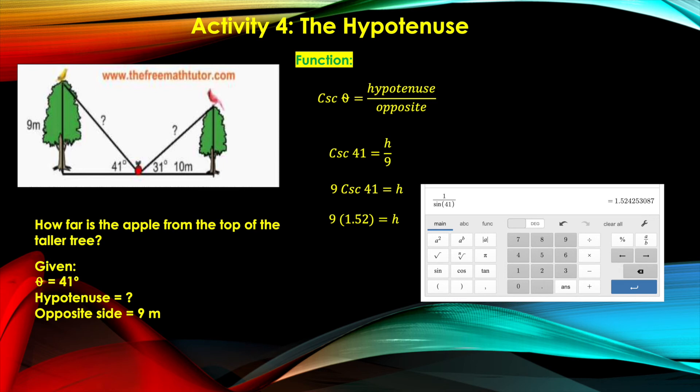Finding the product of 9 and 1.52, that is approximately 13.68. And if I want to use one decimal place here, it's 13.9 meters equal to h.